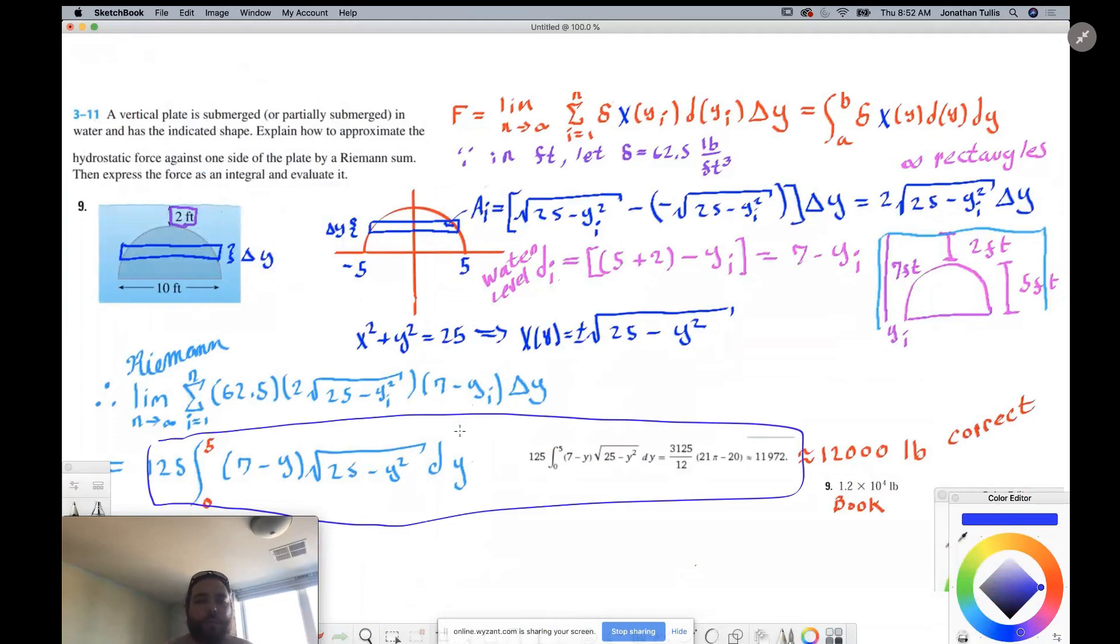What you need to do is, if you draw a rectangle across, then you can imagine what the area would be. And we would call this delta y. Now depending on the object, you could go with respect to x as well.